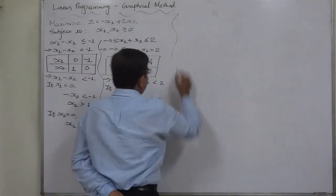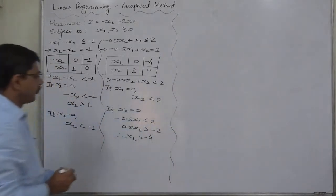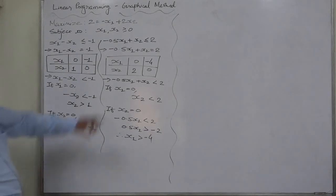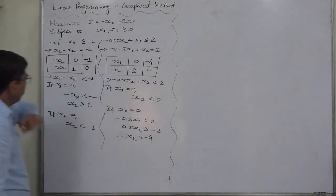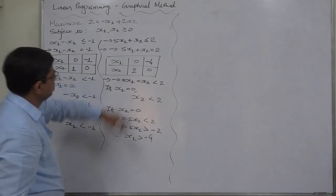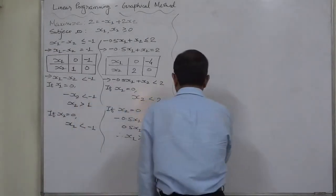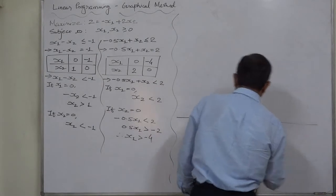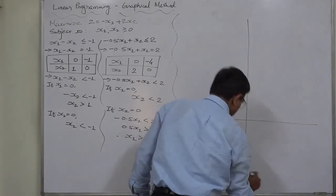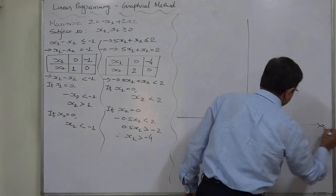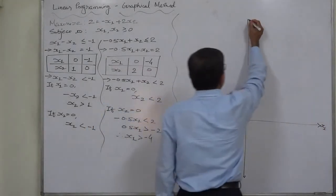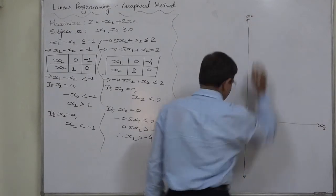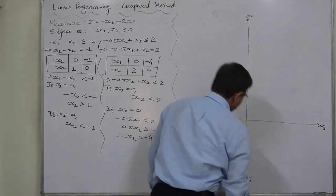Now we can draw the graph of this problem. On x axis, we have to go up to minus 4, and on x2 axis, we have to go up to 2. So the left-hand side will be larger in this particular case. This is x1, this is x1 dash negative side. This is x2 and this is x2 dash.